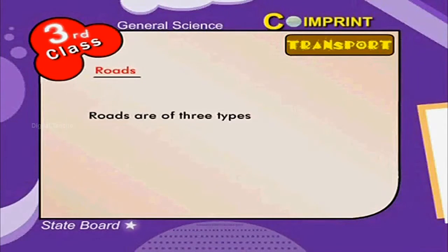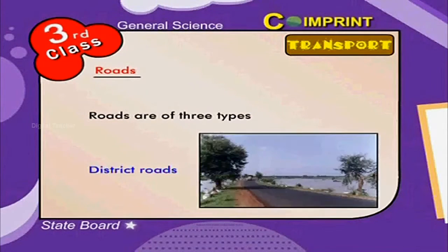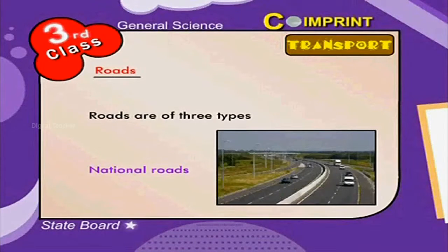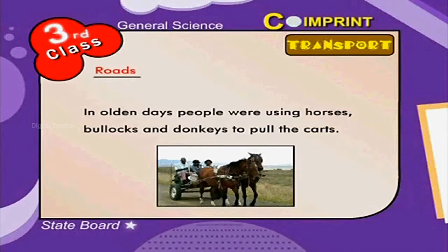Roads are of three types: village roads, district roads and national roads. In olden days people were using horses, bullocks and donkeys to pull the carts.